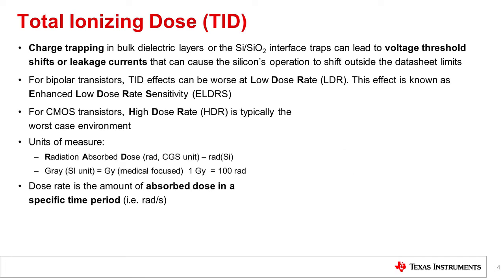Looking at TID a bit deeper, ionizing radiation can charge dielectrics such as oxide or nitride, which can result in traps in that dielectric. Radiation can also change surface states at the oxide-silicon interface, which can lead to increased leakage. This causes a rise in both supply and bias current, which can impact a number of attributes such as offset voltage and response time.